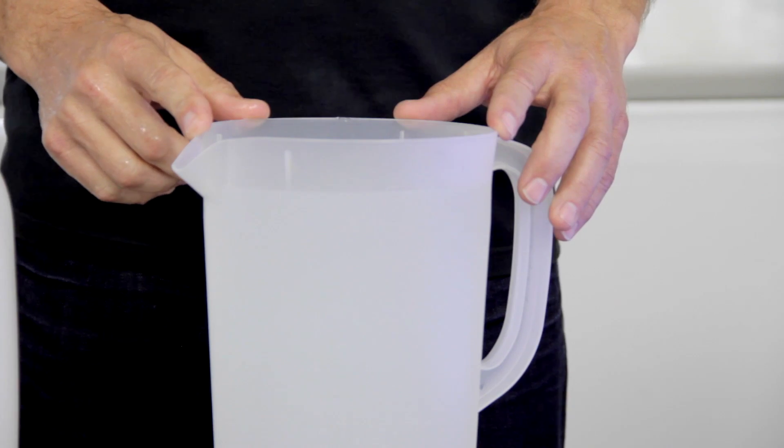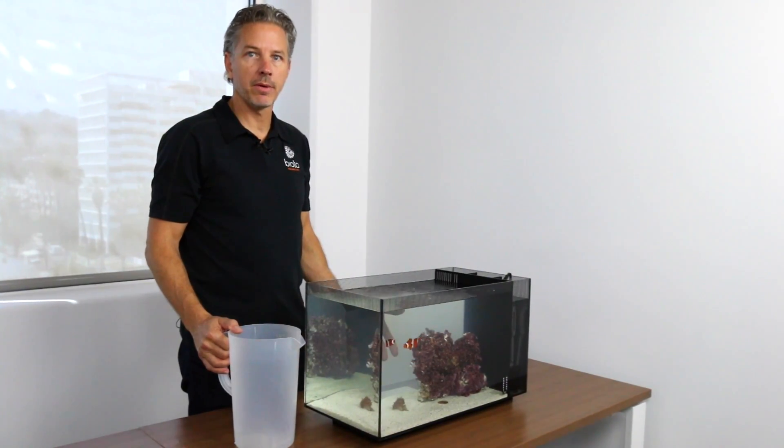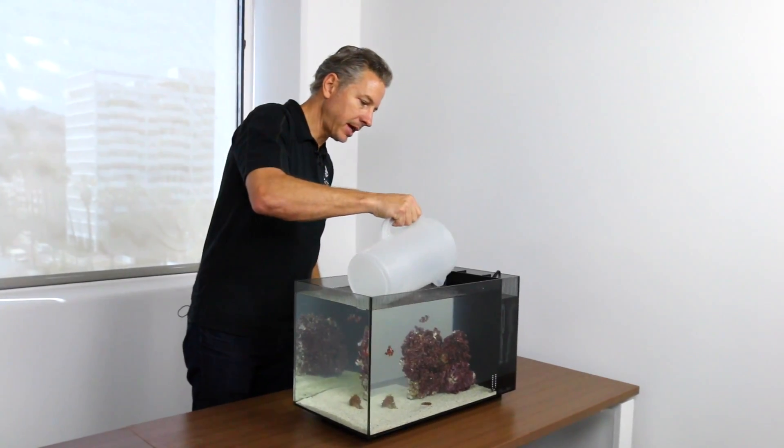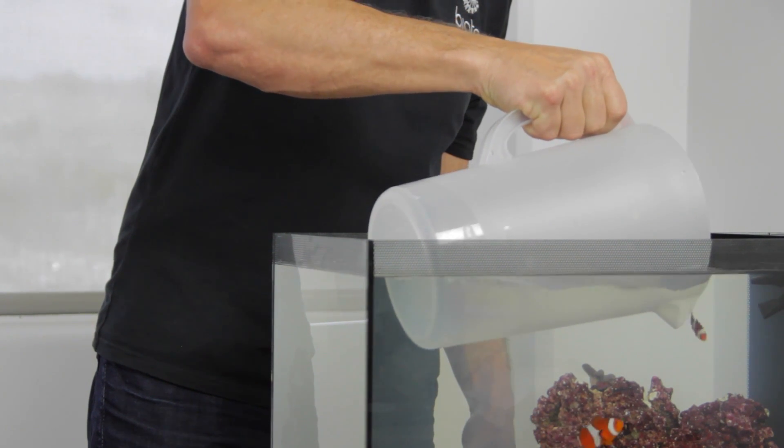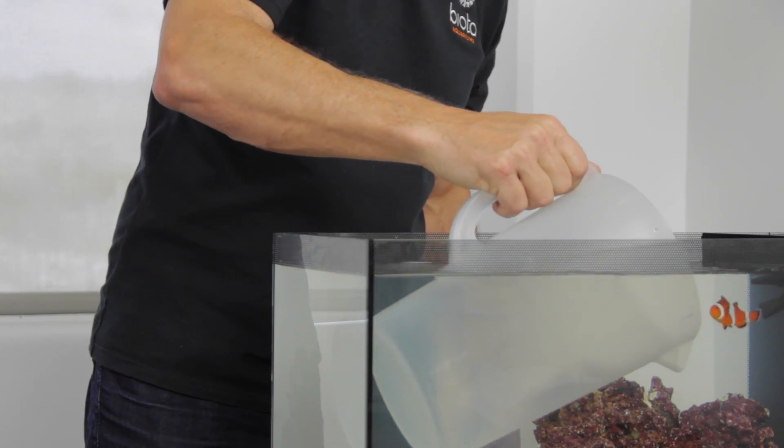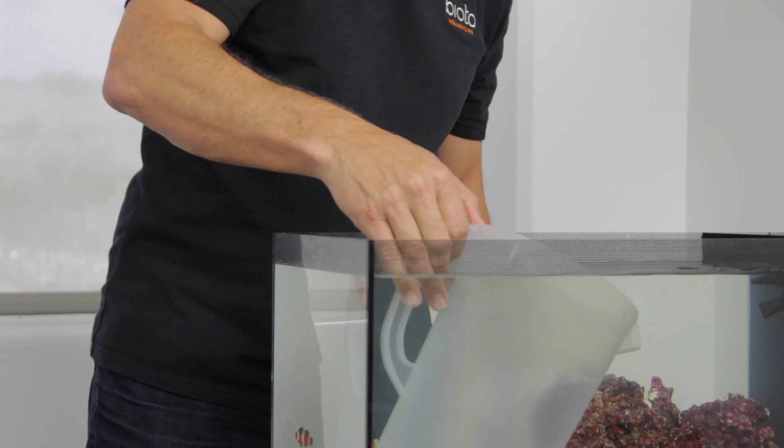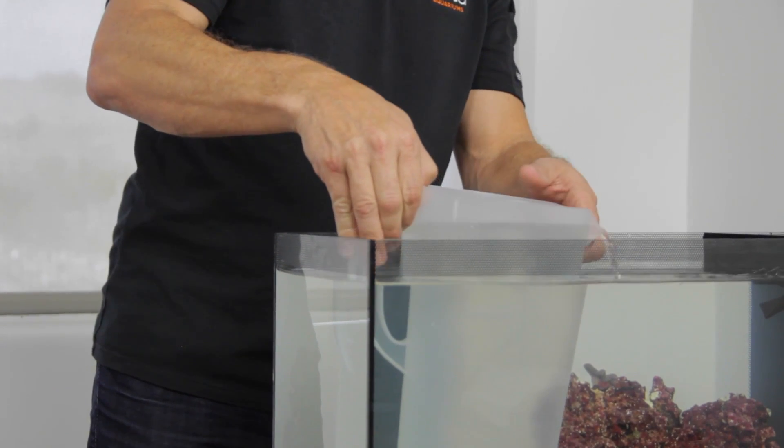And soon this will be ready to be added to your aquarium. All right, so we have our seawater ready to do our water change and we're going to remove one gallon from the aquarium. So we'll lower the pitcher into the tank, just being careful not to knock any corals or rock over. Just slowly lower it down. And we'll lift the pitcher out.